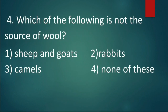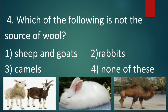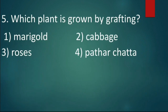Question number four: Which of the following is not a source of wool? Options: sheep and goat, rabbits, camels, or option four: none of these. Kids, out of these, sheep and goats, rabbits, and camels are all sources of wool. Hence our answer is option four: none of these.